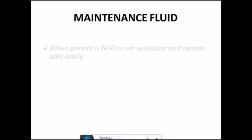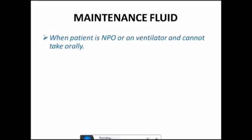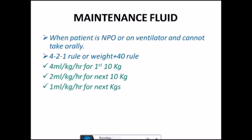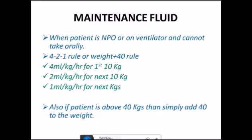Now maintenance: when patient is NPO or on ventilator and cannot take orally, should give maintenance. The rule which applies we are using is 4-2-1 rule, or it can also be called the weight plus 40 rule if the patient's weight is more than 40 kg. I'll explain: 4 is 4 ml per kg per hour for first 10 kgs, then 2 ml per kg per hour for next 10 kgs, then 1 ml per kg per hour for next whatever left kgs. Also, if the patient is above 40 kgs, then simply add 40 to the weight.